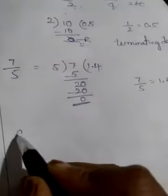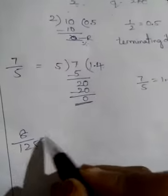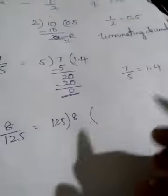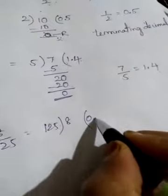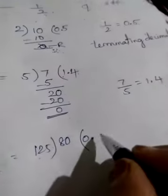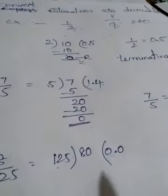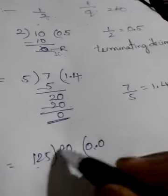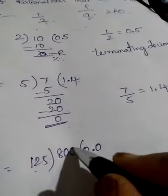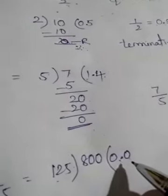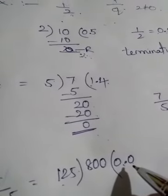One more example for terminating decimal: 8 by 125. That means 8 divided by 125. We check the 125 times table — 0 point. Here 10, then 80 — 125 table 80 is not possible, so we take one more 0. We need another 0 because 125 table 80 is not possible. Now we check 125 table for 800.